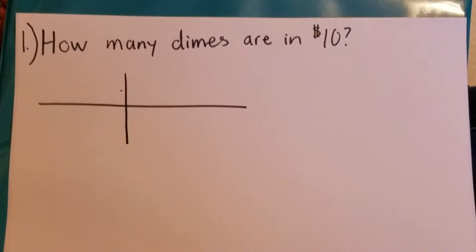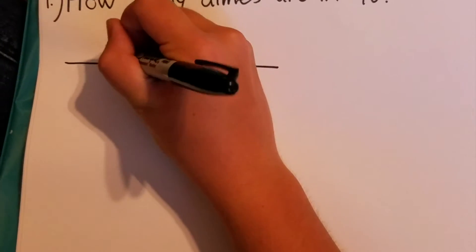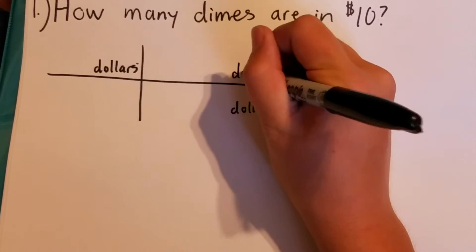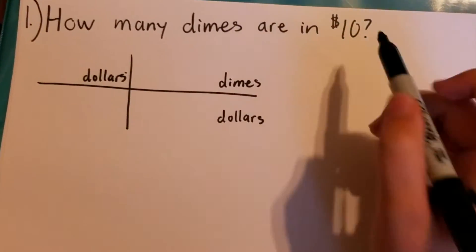The first question is how many dimes are in $10. I'm just going to fill in the unit. So dollars go in the top and the bottom so that they'll cancel. And then I want to end up with dimes so dimes will go in the top. I'm given $10.